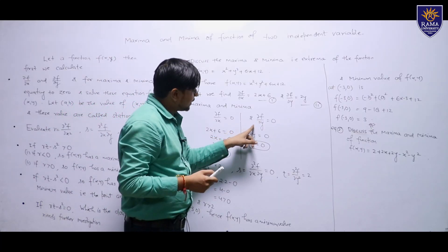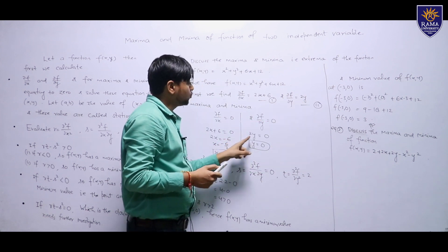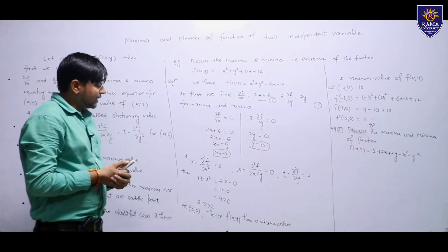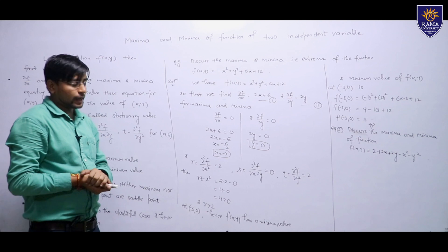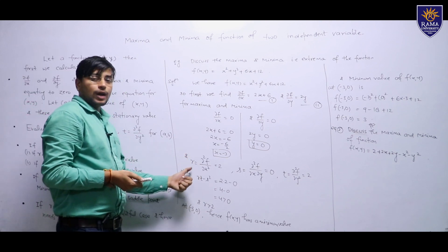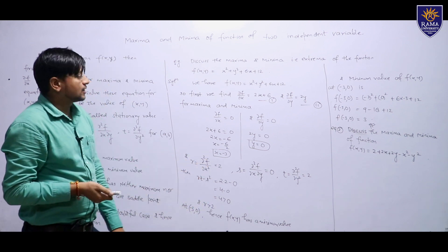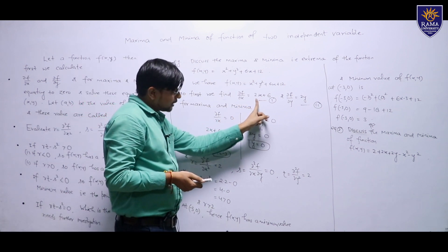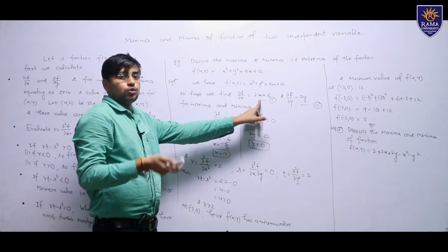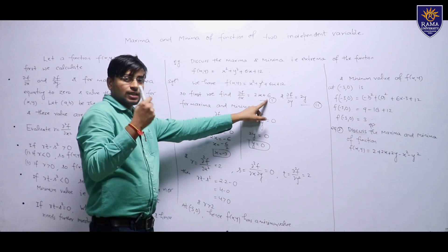Similarly, setting ∂f/∂y = 0 gives 2y = 0, therefore y = 0. Now we calculate the second partial differentiation with respect to x. Since the first partial derivative ∂f/∂x = 2x + 6, the second partial derivative r = ∂²f/∂x² = 2, as 6 is a constant whose derivative is 0.